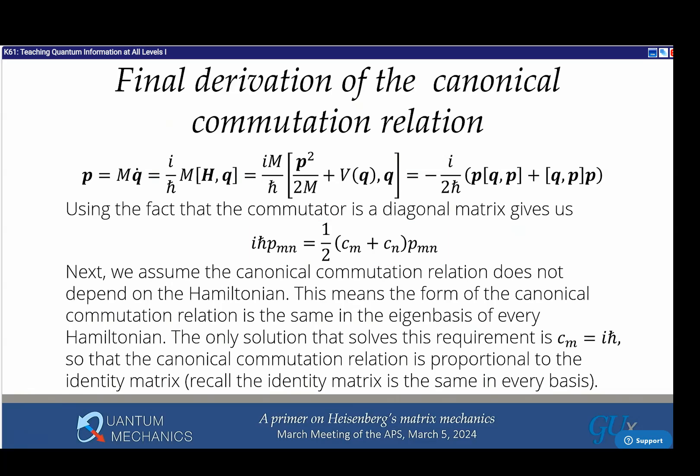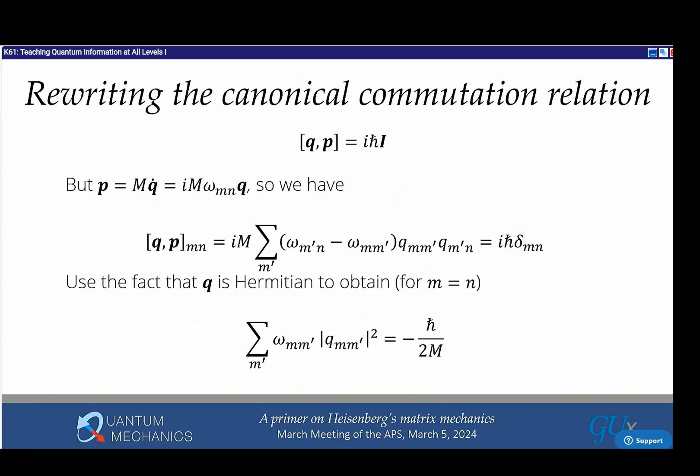The canonical commutation relation can't depend on what Hamiltonian I'm using. The diagonal basis for one Hamiltonian is different from another. So this commutation relation must be invariant if I change basis for different Hamiltonians. The only matrix that doesn't change if you change basis is the identity matrix. This diagonal matrix must be proportional to the identity, and the proportionality is i*h-bar. You can actually derive the canonical commutation relation just from these two ideas about matrix mechanics.